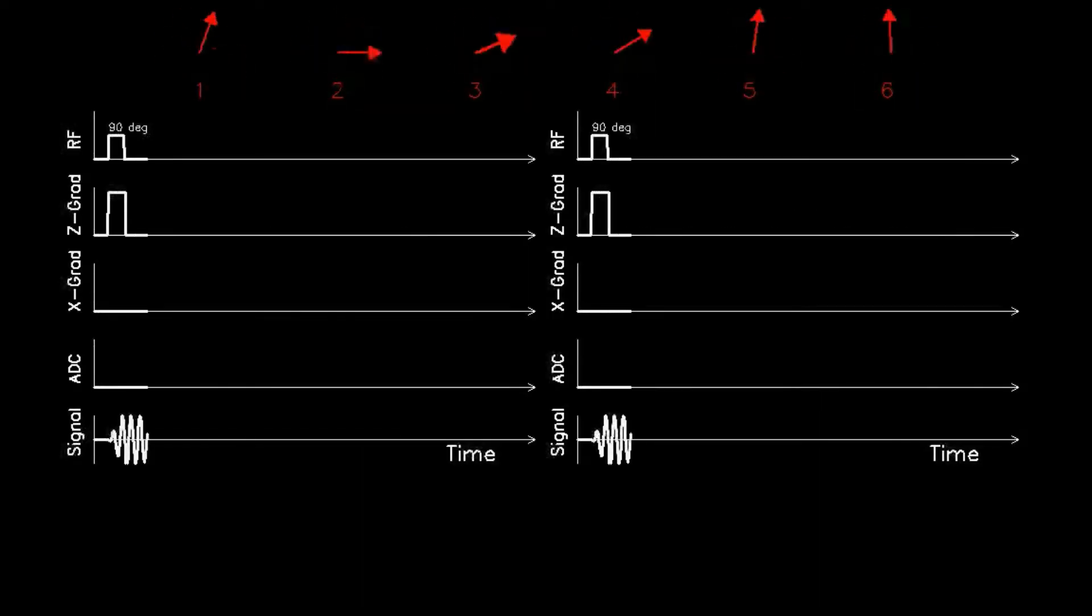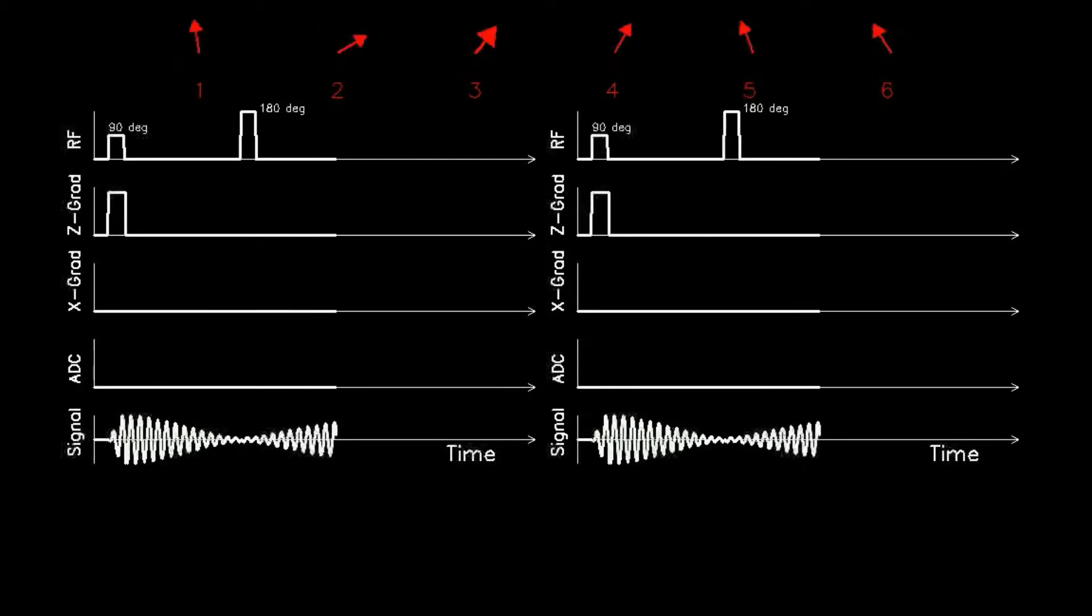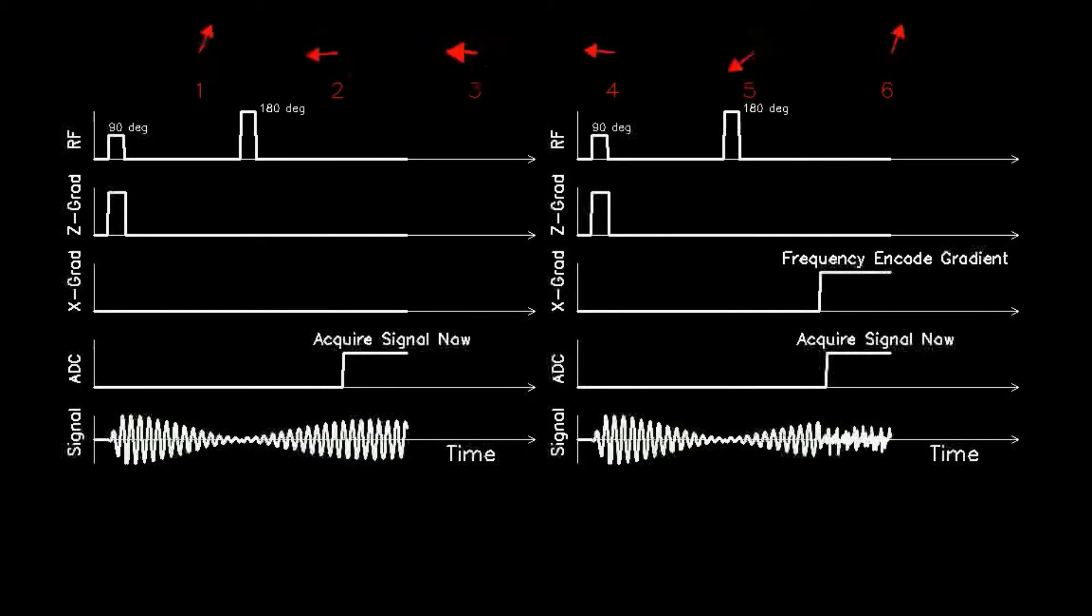This animation details a one-dimensional example of frequency encoding. The top horizontal array of red arrows show the transverse magnetization vector of six voxels labeled 1 through 6. The thickness of the arrows represents their strength. Here voxel 3 is the strongest.